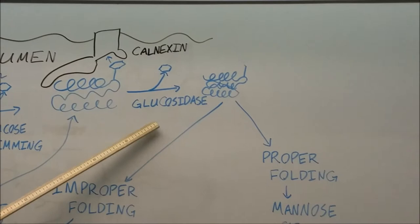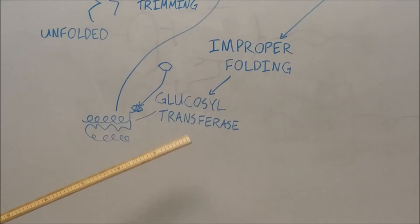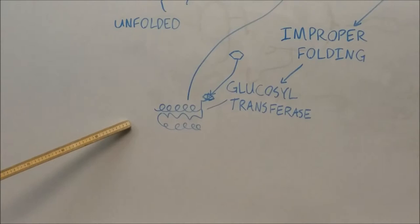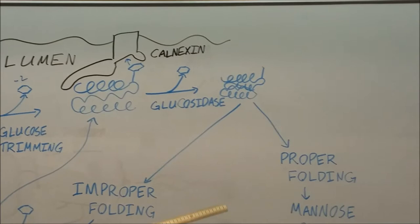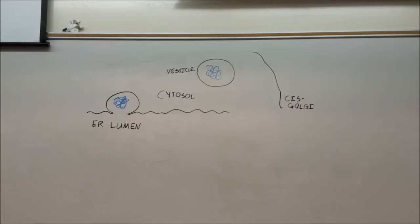Next, glucosidase will remove that terminal glucose, and one of two things will happen. If it's improperly folded, glucosyl transferase will remove glucose from UDP and add it back to the improperly folded protein, where it will go back to calnexin and try to fold correctly. Or it will be properly folded, and in that case, a mannose will be cleaved and it will exit from the endoplasmic reticulum.